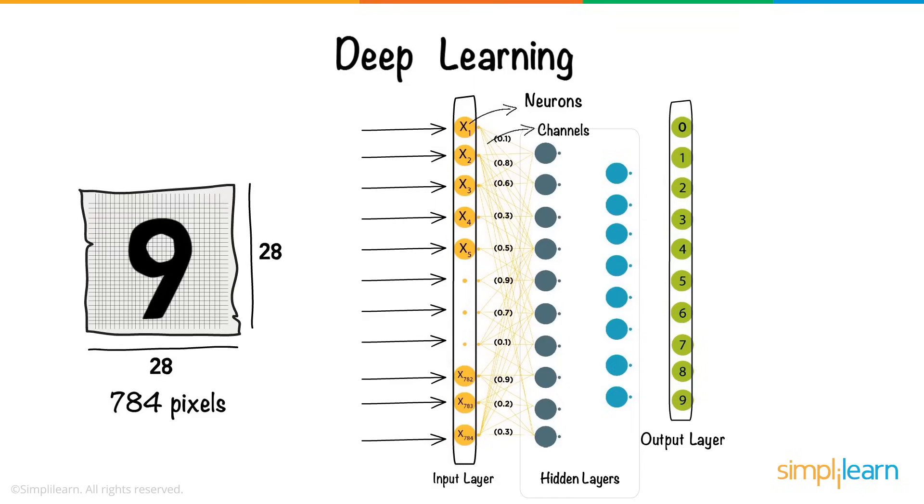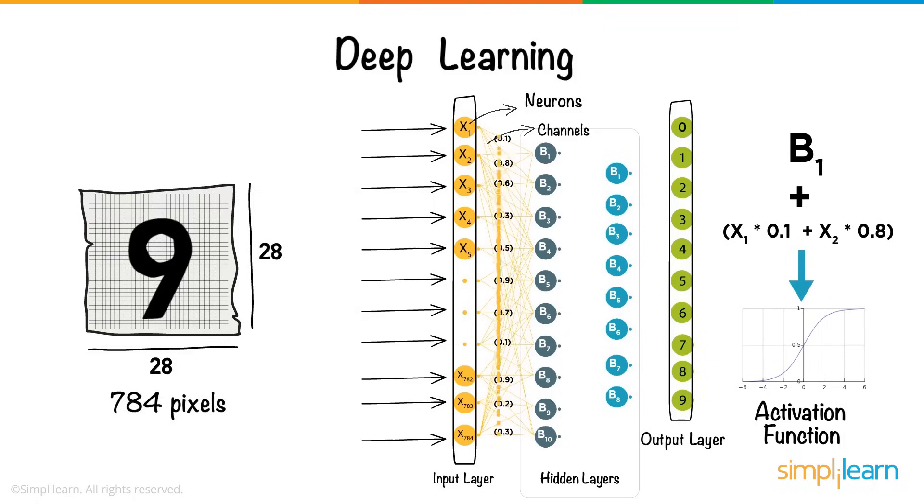All neurons have a unique number associated with it called bias. This bias is added to the weighted sum of inputs reaching the neuron, which is then applied to a function known as the activation function. The result of the activation function determines if the neuron gets activated.